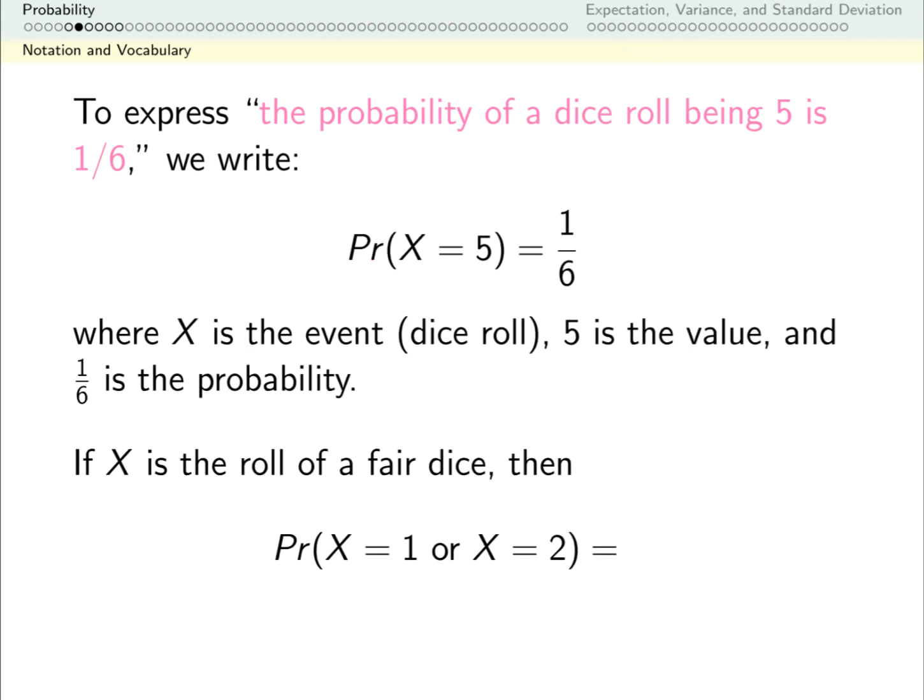Now it's your turn. Take a second. Figure out how to express this in a full English sentence. And then think about what number it's equal to. PR means probability. Capital X is our dice roll. And the values we're concerned with are 1 or 2.